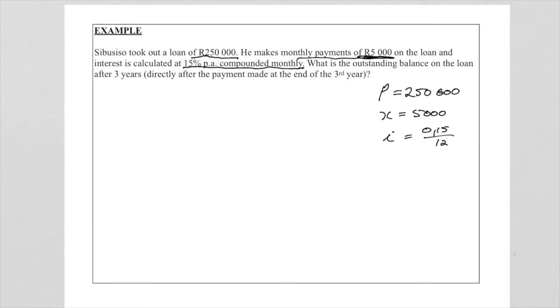Now they want us to calculate the outstanding balance on the loan after three years. So just to make it clear, what do we mean by three years? It is that after that payment made at the end of the third year, directly after that payment. So let us now look at the timeline.